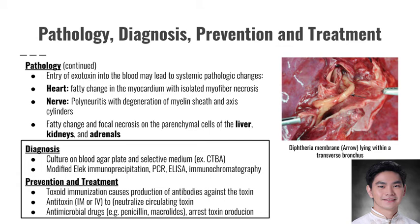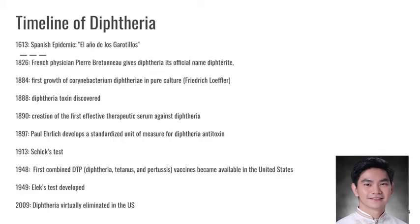For prevention and treatment, we provide toxoid immunization for prevention, which causes production of antibodies against the toxin. We also give antitoxin, either intramuscularly or intravenously, to neutralize circulating toxin, and antimicrobial drugs to arrest toxin production. In 1613, there was an epidemic in Spain termed 'El Año de los Garotillos,' meaning 'year of strangulation,' due to many deaths caused by asphyxiation from the pseudomembrane. In 1913, the Schick test was developed.